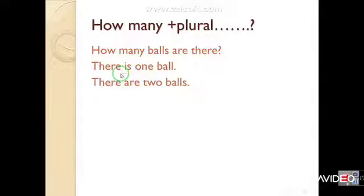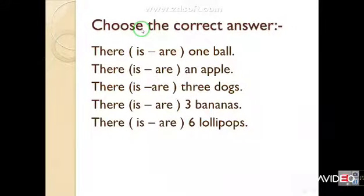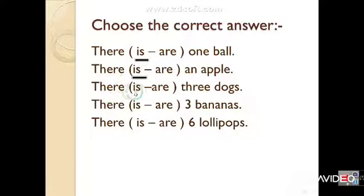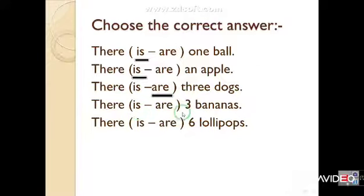Okay, let's do this together — choose the correct answer. Number one: there is or there are — one ball? Just one ball, so: 'There is one ball.' Number two: there is or there are — an apple? 'There is an apple.' Number three: three dogs — we have three dogs, so: 'There are three dogs.'